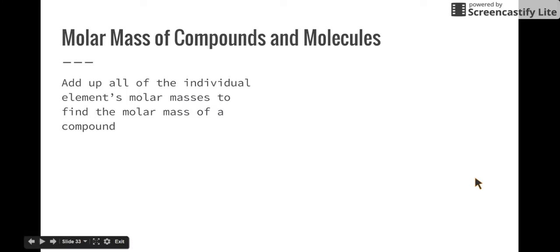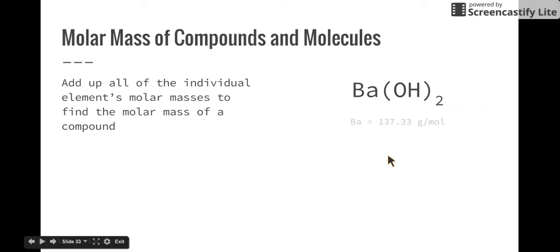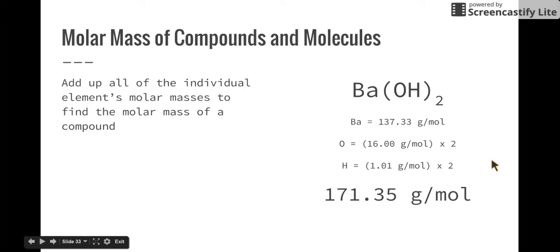But what about compounds? If you had a compound, say Ba(OH)₂, or barium hydroxide, how would you find the molar mass? All you need to do is add up all the individual elements' molar masses. If we know that Ba on the periodic table is 137.33 grams per mole, and oxygen is 16 grams per mole and we have two of them, and hydrogen is 1.01 grams per mole — those are the individual molar masses of each element — if you added those all together, you would get 171.35 grams per mole. That is the molar mass of this compound.